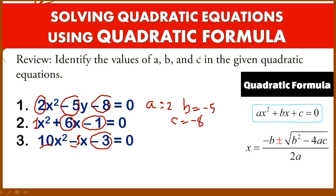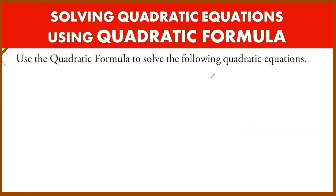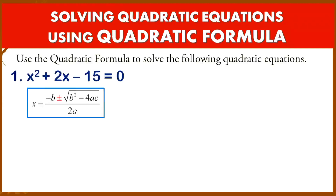It's very important to recall how to find the values of A, B, and C in a given quadratic equation before proceeding to the quadratic formula. Now let's jump into examples on how to solve quadratic equations using the quadratic formula. The formula is: x = (−B ± √(B² − 4AC)) / 2A.